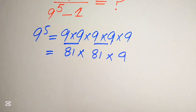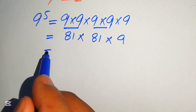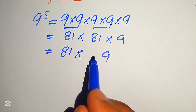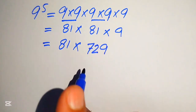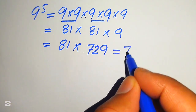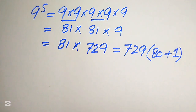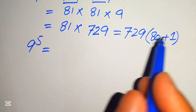Some students can do this type of multiplication mentally, but for those who find it difficult, I'll work through the calculations step by step. First we multiply 81 by 9: 9 ones are 9, and 9 eights are 72, so 81 times 9 becomes 729. In the next step we multiply further, rewriting these numbers as 729 and 81 written as 80 plus 1.